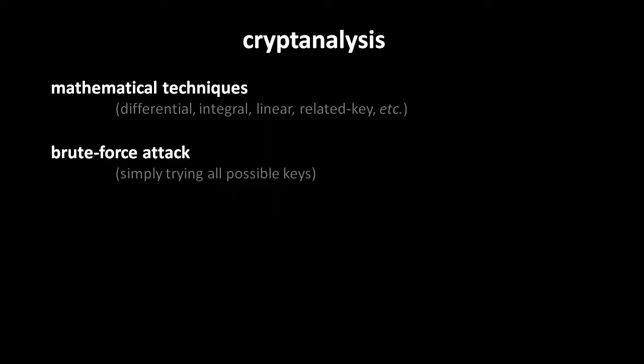We'll end now with a brief discussion of how encryption gets broken. Cryptanalysis refers to the art and science of extracting hidden information from a system. One approach is to apply mathematical techniques, including differential analysis, integral analysis, linear analysis, related key attacks, and other such techniques. But aside from such sophisticated approaches, the simplest way to break encryption is a brute force attack — simply trying all possible keys. Any decent encryption system uses large enough keys to make this infeasible. Even a smaller key by today's standards, like a 128-bit key — 2 to the 128th power is a very, very large number — such that given all the computational resources in the world, you probably still couldn't search through all the keys in anything like a reasonable amount of time. Low-end estimates of how long that would take are somewhere in the range of millions of years.